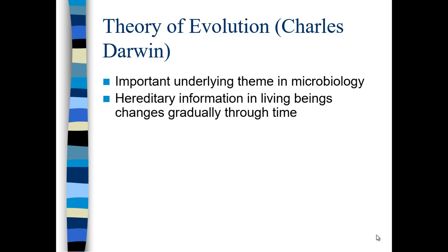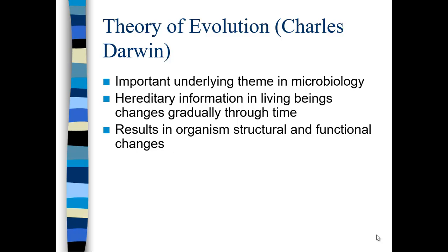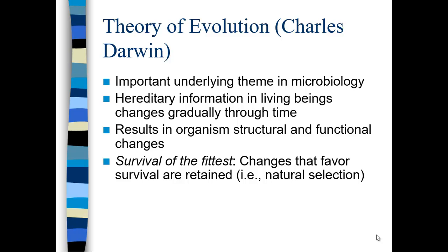The theory of evolution relies on hereditary changes that happen over a long period of time. These changes are purported to happen gradually, and this results in organismal, structural, and functional changes. There are two prongs of the theory of evolution, and the first one is on this slide. The last two bullets reinforce the first facet of the theory of evolution, which is natural selection.